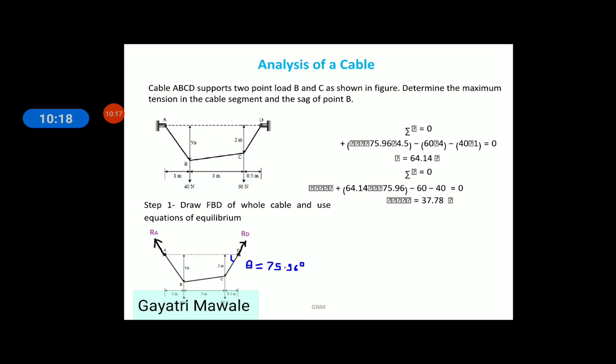Looking at the FBD, if we take moment about A point, moment because of RA will become 0. Moment because of 40 N force will be 40 into 1 meter and it is clockwise so minus. Next is 60 N force and its distance is 4 meter. So, it will cause clockwise moment of 60 into 4. Further, RD cos theta will pass through A point. So, no need to take its moment. Moment of RD sine 75.96 will be anticlockwise and its distance is 4.5 meter from point A.